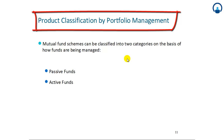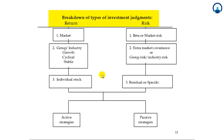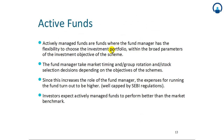Product classification by portfolio management: mutual fund schemes can be classified into two categories on the basis of how funds are being managed — passive funds and active funds. The breakdown of investment judgment covers return and risk, including fund market beta or market risk, group/industry growth (cyclical or stable), extra-market covariance or group risk, industry risk, and individual stock residual or specific risk. Active strategies and passive strategies come into picture here. As previously mentioned, passive means copying the index.